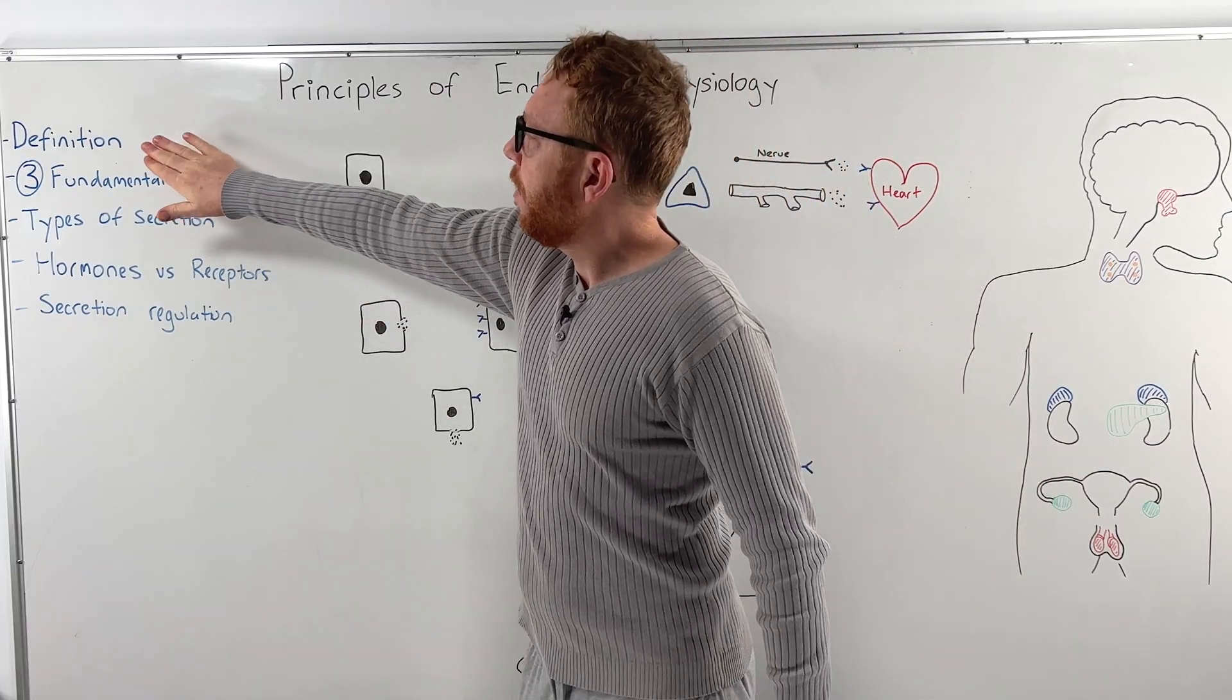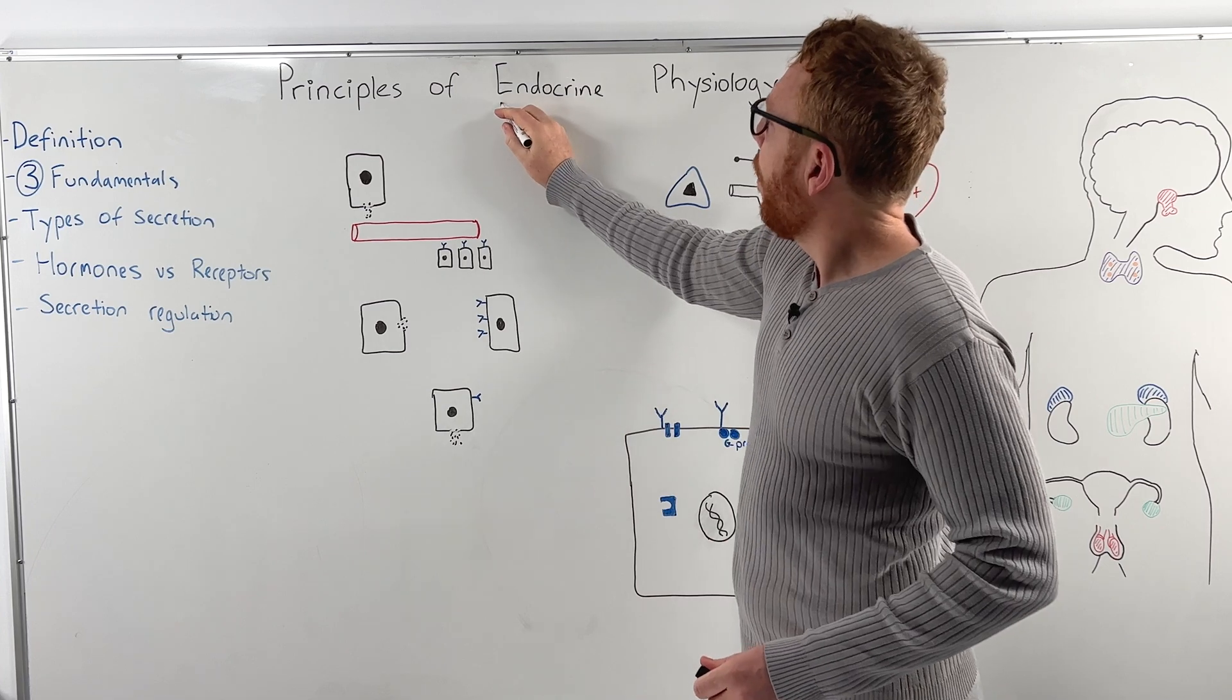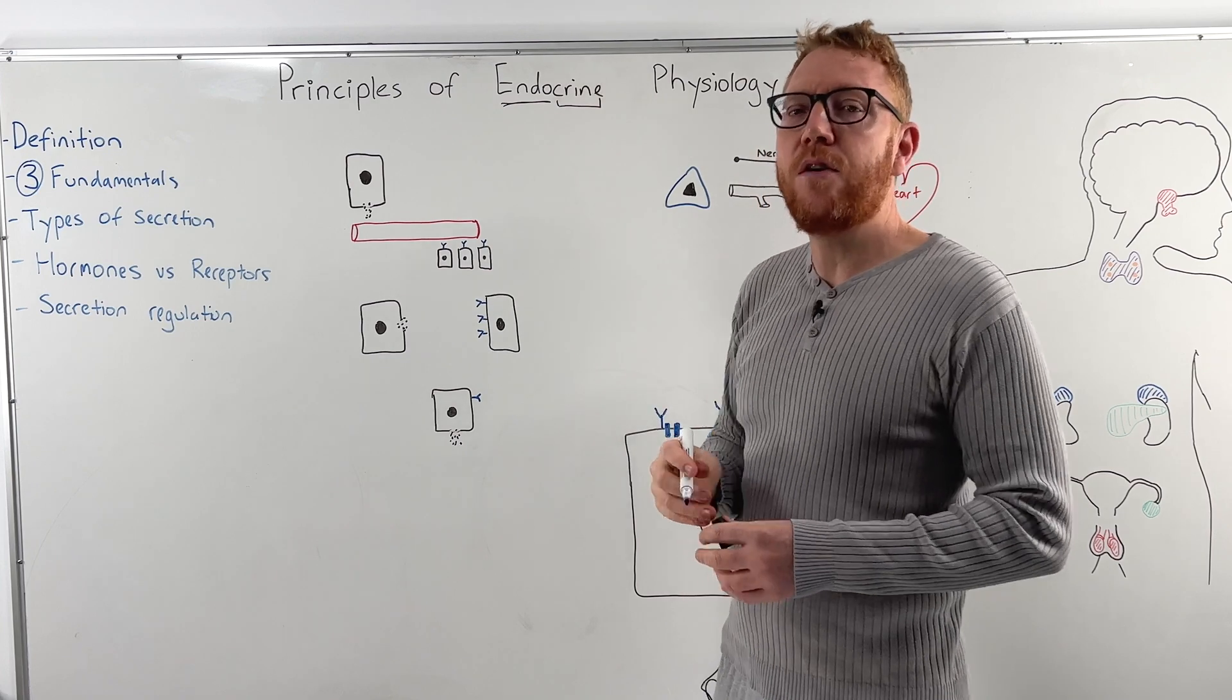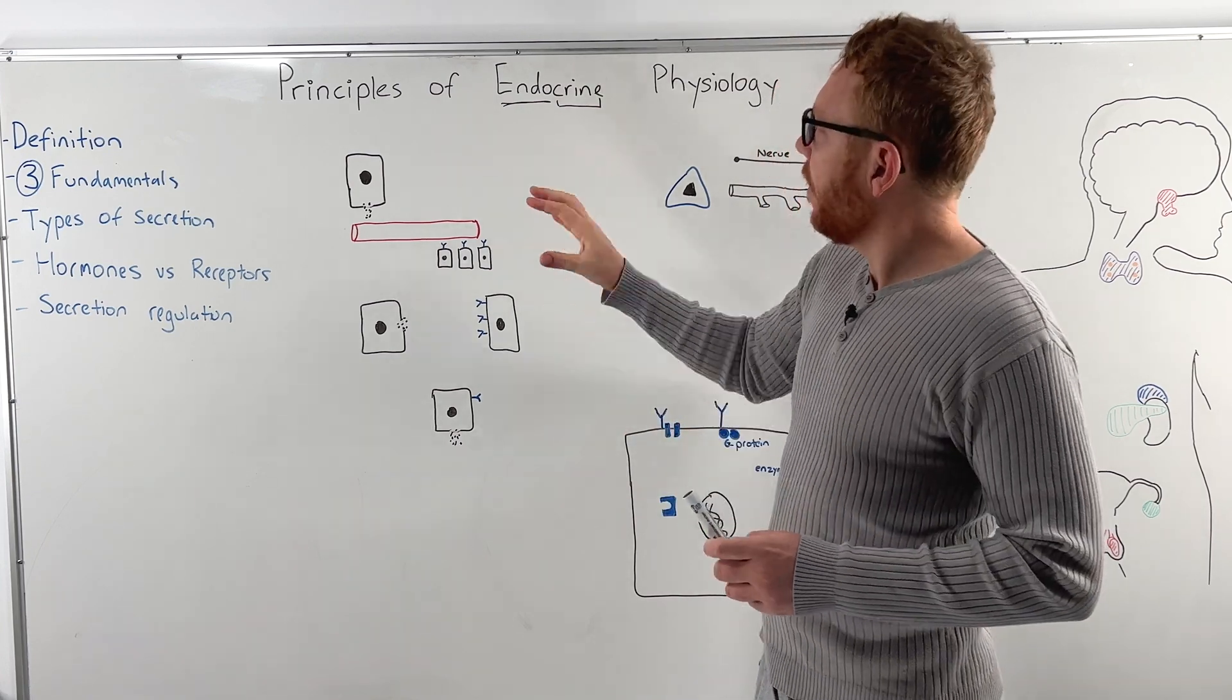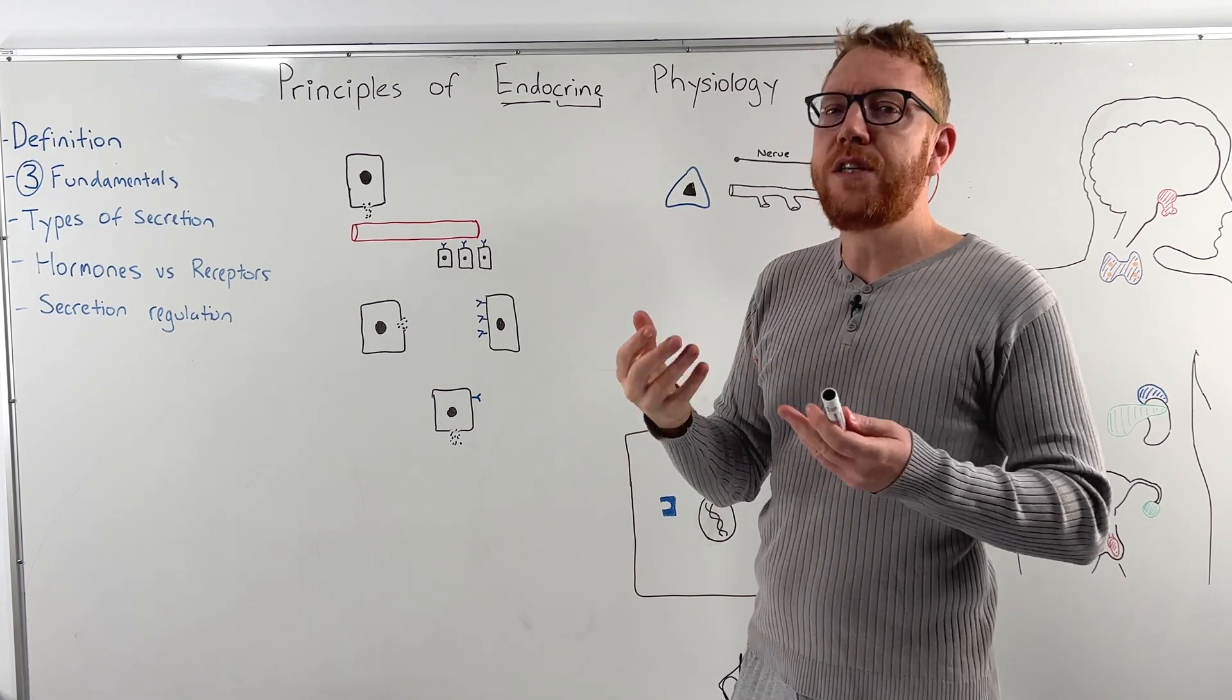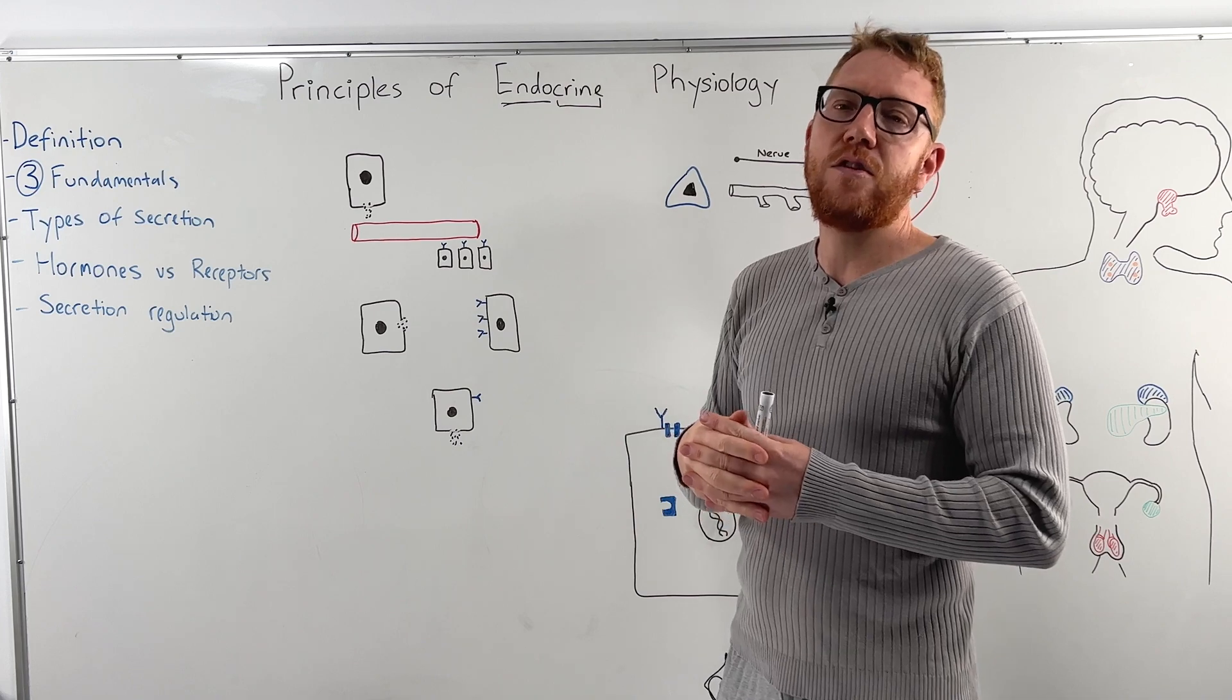So let's start with the definition. What does endocrine mean? Well endo means within and crine means to separate or to secrete. So basically whenever you hear endocrine it's referring to cells or tissue that secretes a substance that then communicates to the body.